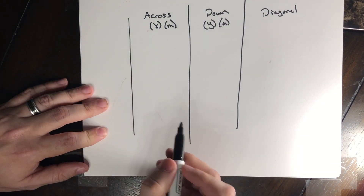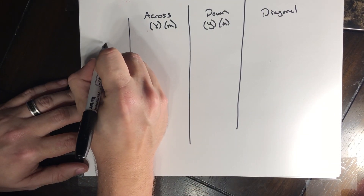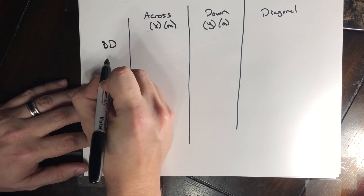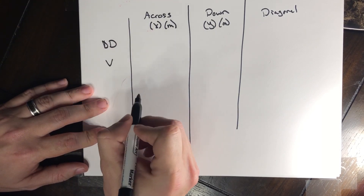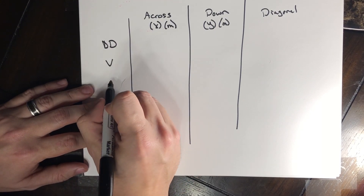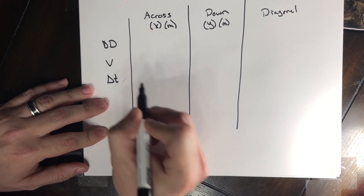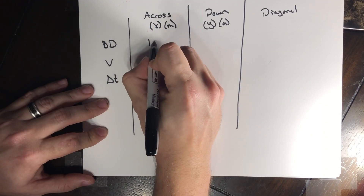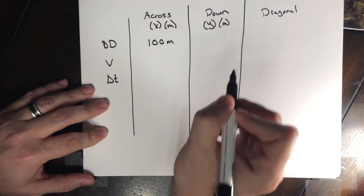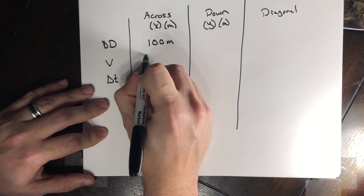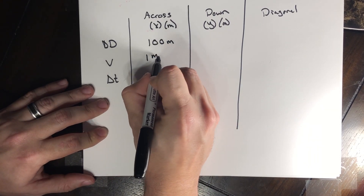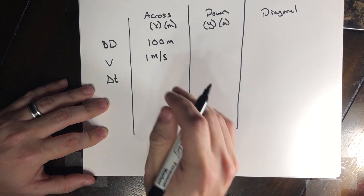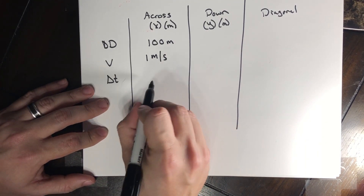What do we know? We know we need our position — our displacement, our change in displacement, our velocity in that direction, and our change in time. For part one, he's got to go 100 meters and he can only go 1 meter per second, swimming straight across. We need to figure out what that time is.